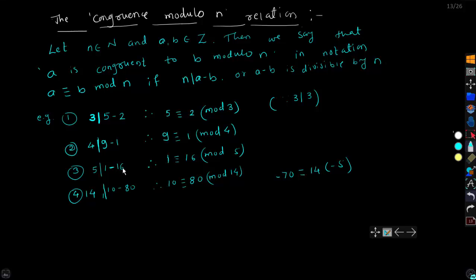Similarly, 1 minus 16 is minus 15, and 5 divides minus 15, so 1 ≡ 16 (mod 5). Also, 10 minus 80 is minus 70, and 14 divides minus 70 since minus 70 equals 14 times minus 5, so 10 ≡ 80 (mod 14). In this way we have defined congruence modulo 3, 4, 5, and 14.